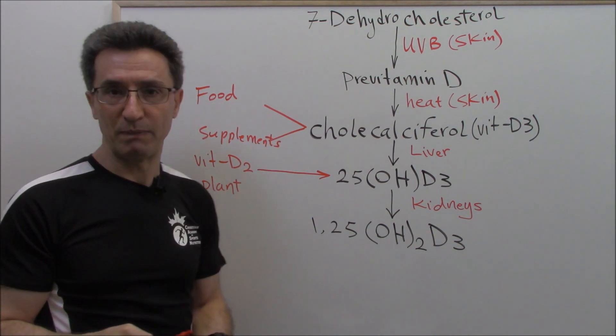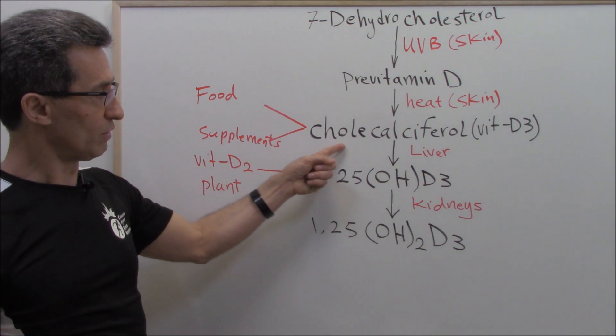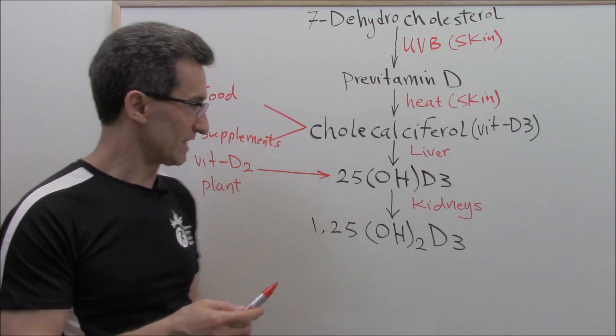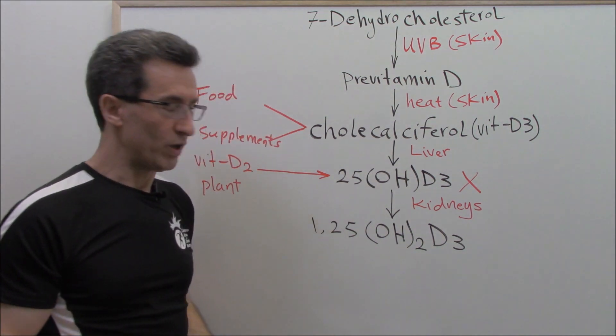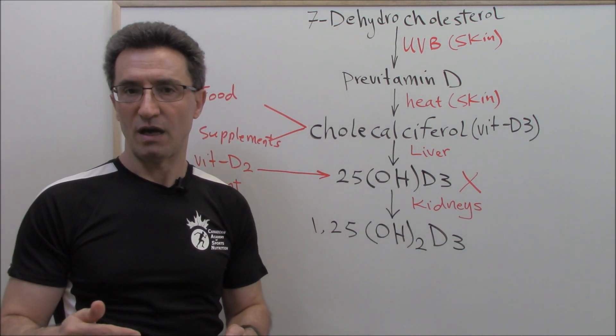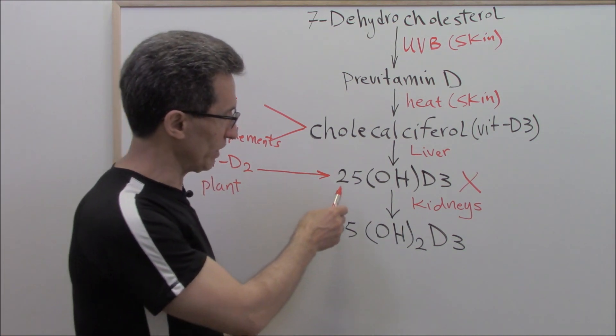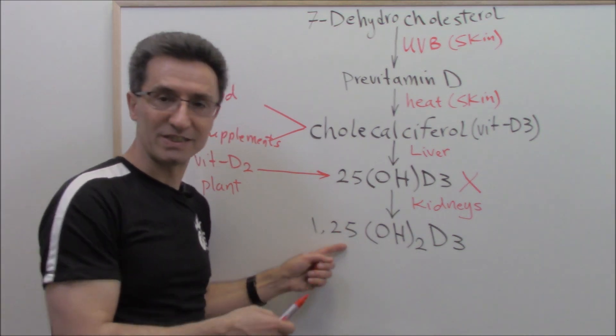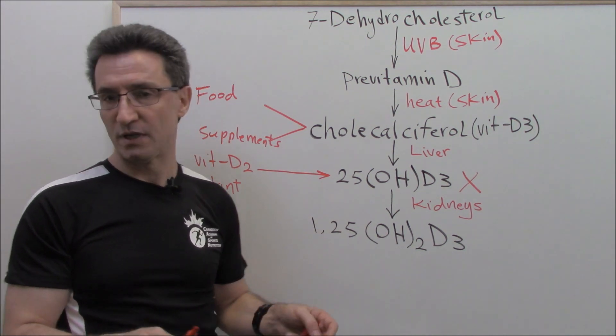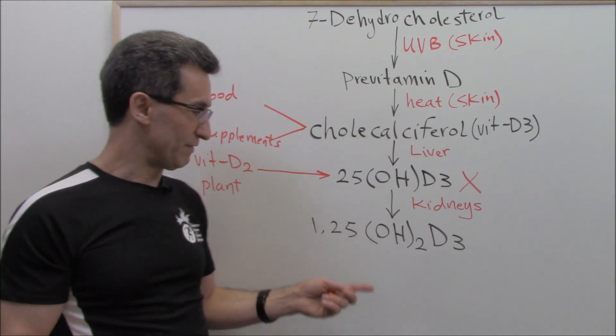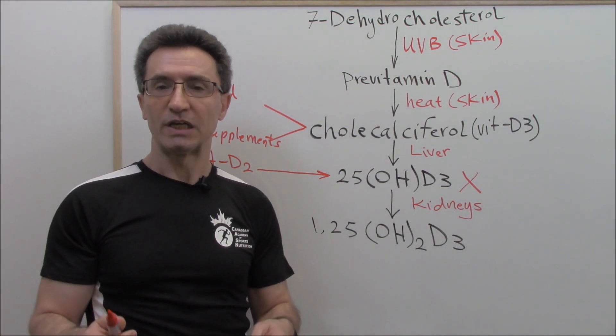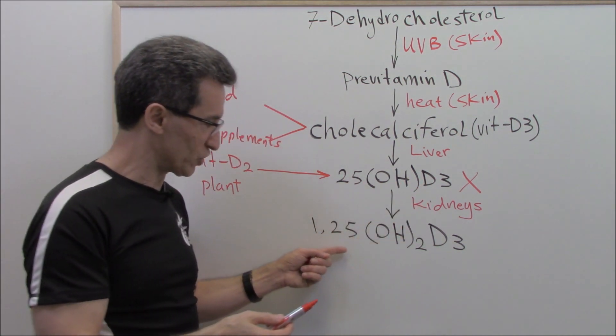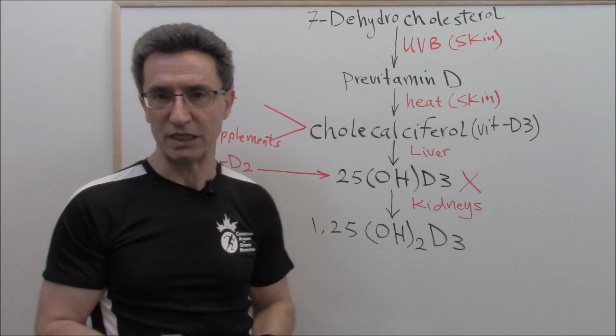When you are having vitamin D pills, they are called calciferol. When you go to see your doctor and they are going to check your vitamin D level, they're going to check 25-hydroxyvitamin D3. They do not check 1,25-dihydroxyvitamin D3, even though this is the active form. Sometimes in rare occasions they check it for research purposes, but usually for clinical purposes you go to your family doctor, they're going to check 25-hydroxyvitamin D3.